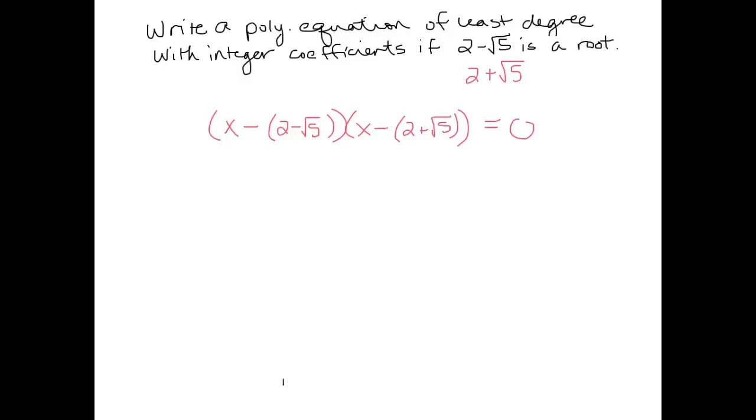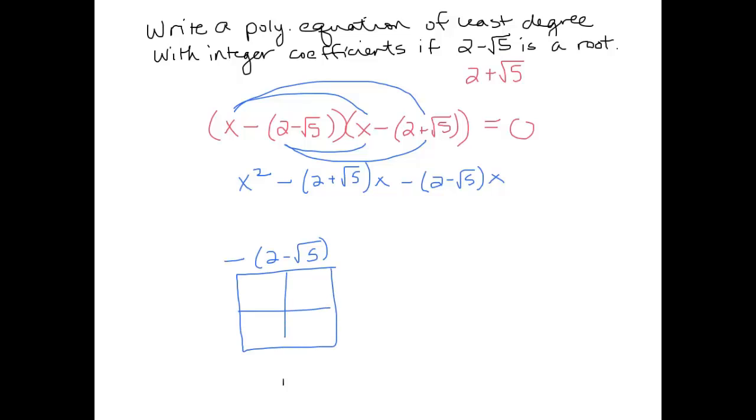So why does this work? Well, let's see what happens. If I were to multiply these together, we would get x squared minus 2 plus root 5x minus 2 minus root 5x. Ah, and then this is the part that's going to hopefully make the irrational pieces disappear.